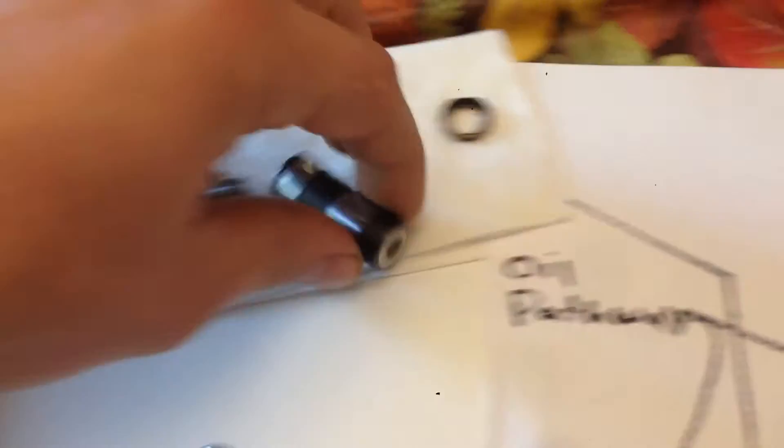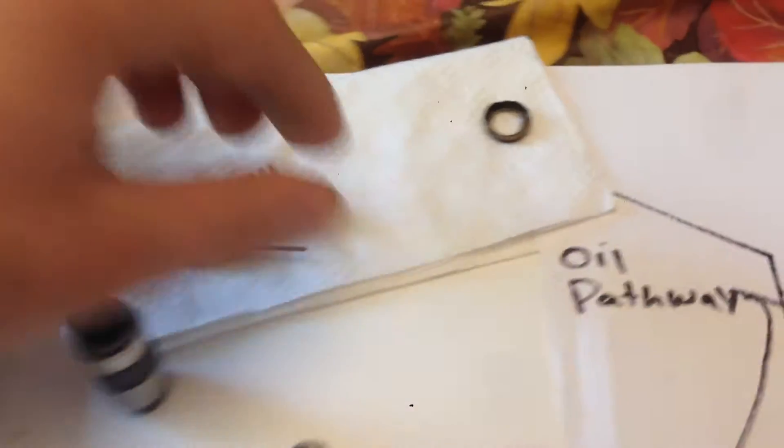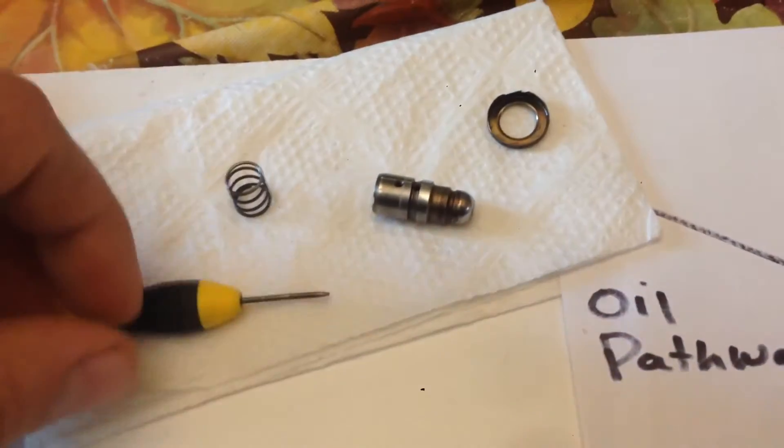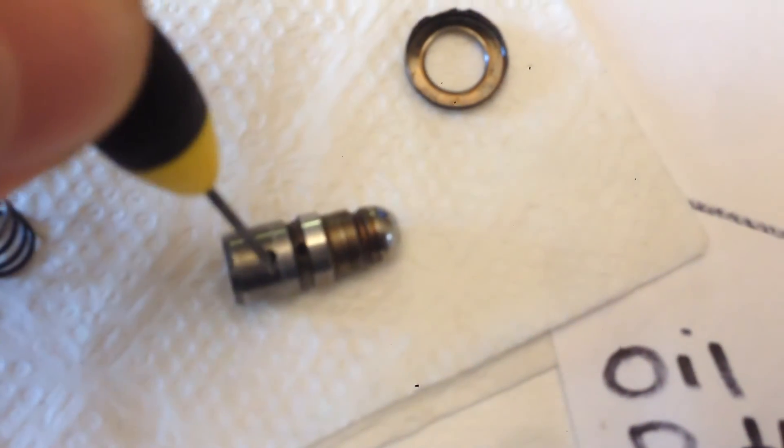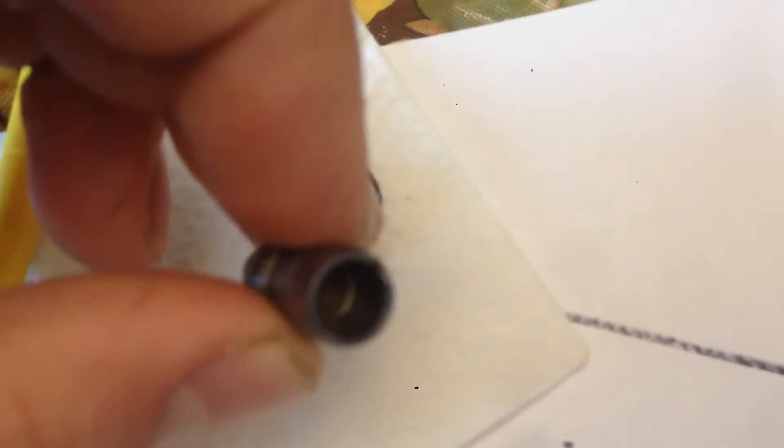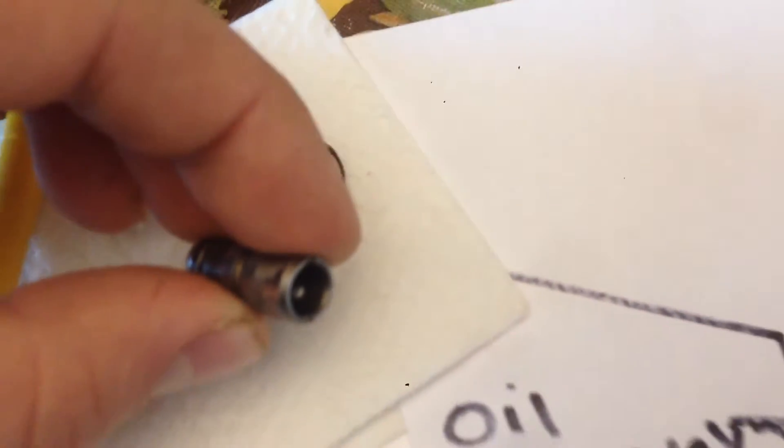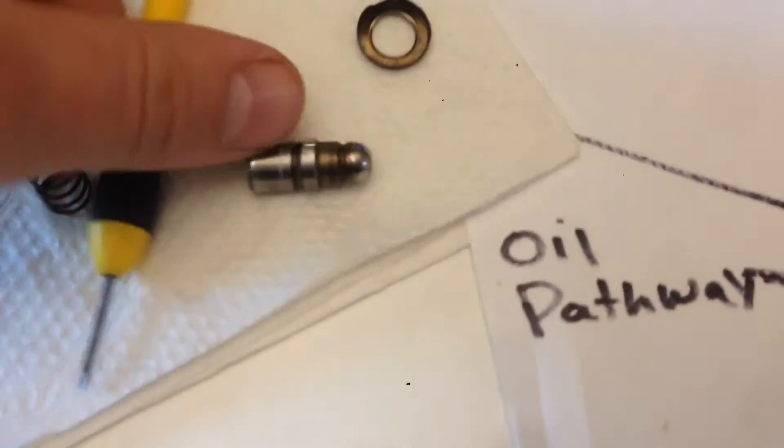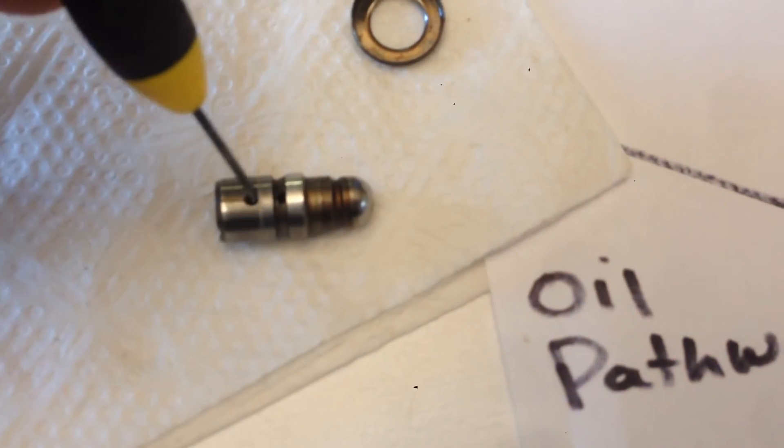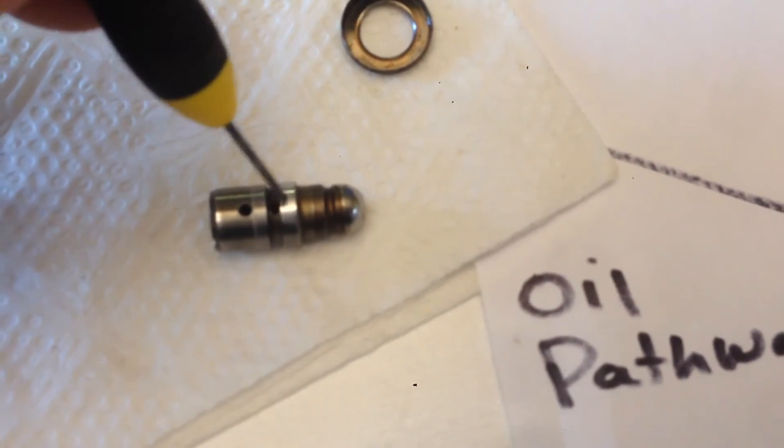You've also got holes in this top piston. You've got this hole here which goes downward. If you look in here you can see the hole there. Then it's got another hole right above that hole—that's the lower hole. The upper hole is right there.